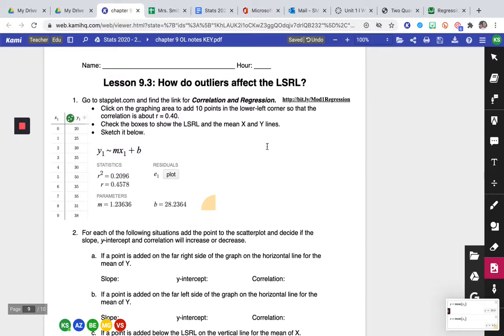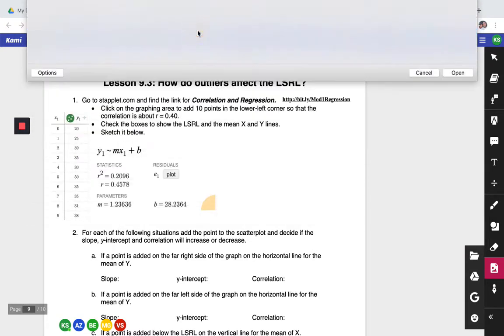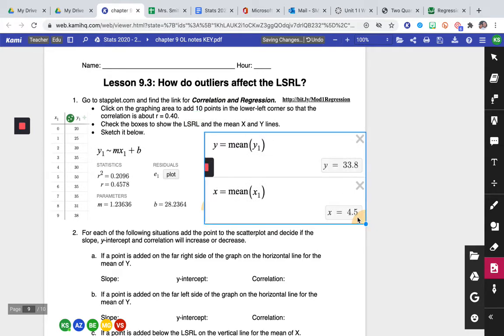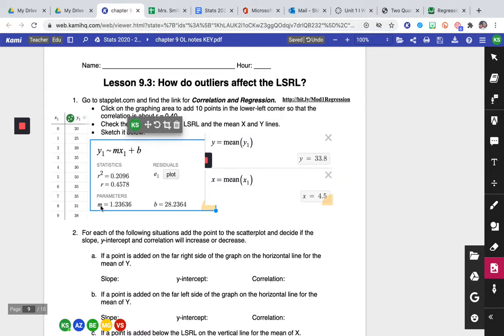Okay, I'm going to drop that there to insert image. Perfect. So this is what we're going to be comparing all of our information to. So my correlation coefficient for this data that I created is 0.4578. My slope is 1.24 and my y-intercept is 28.2.